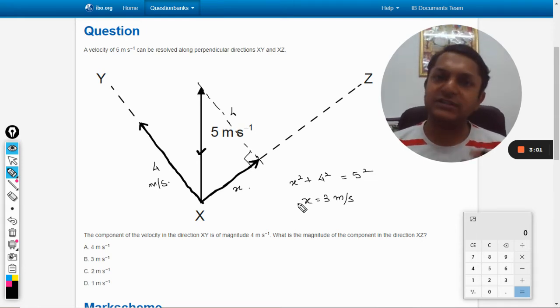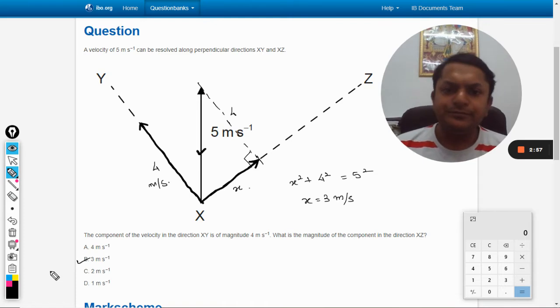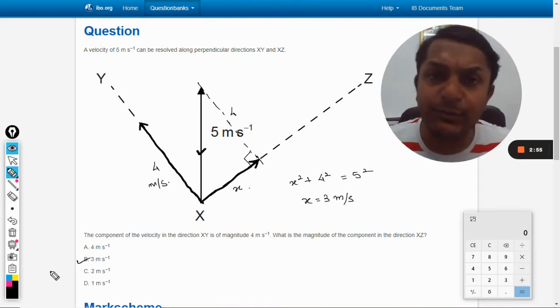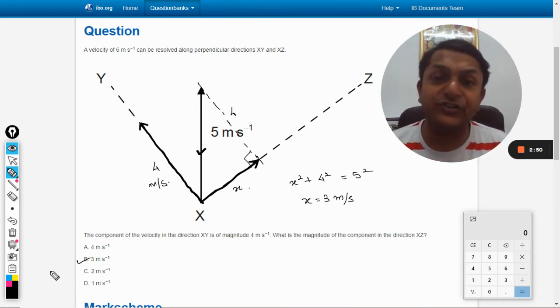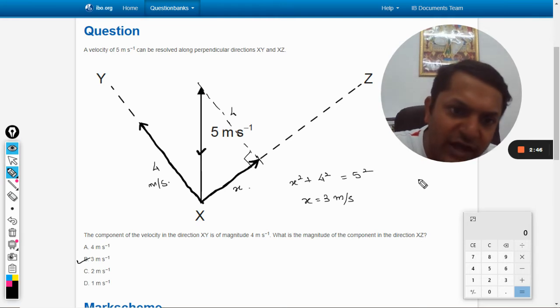Our answer is going to be B. Now this triangle is a very important triangle. This becomes one of the very famous Pythagorean triplet triangles. So this triangle is 3-4-5.